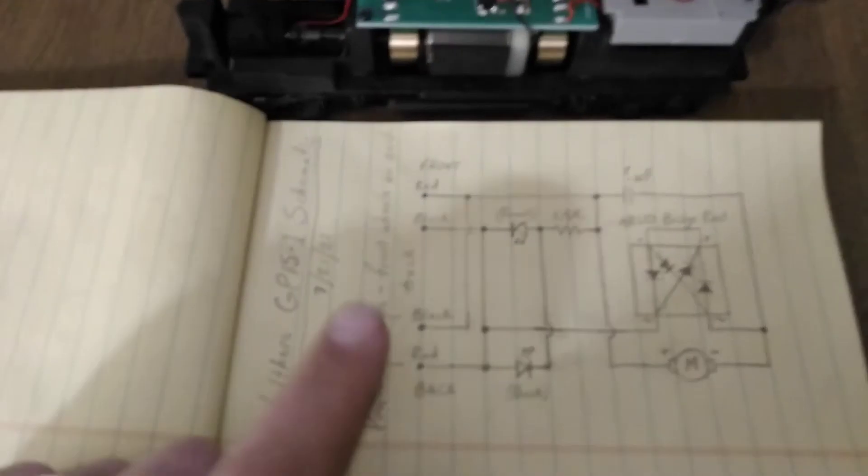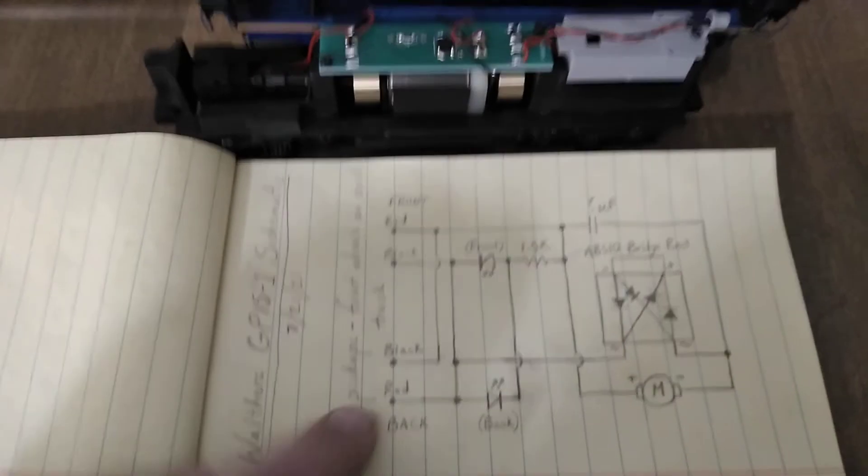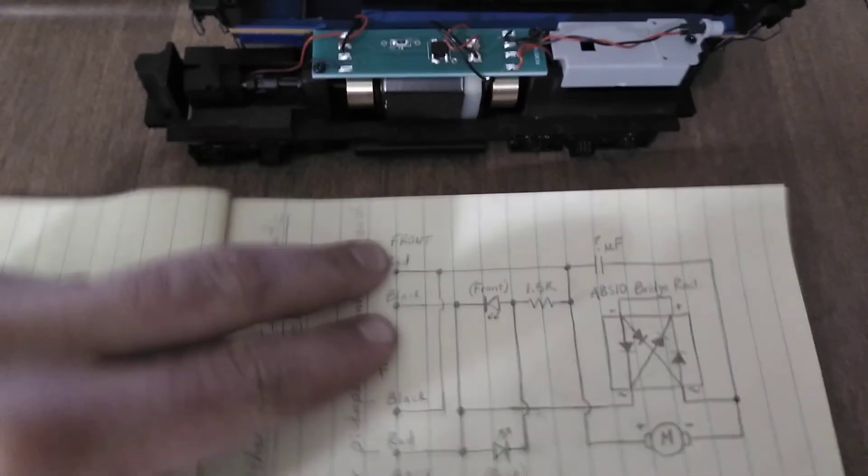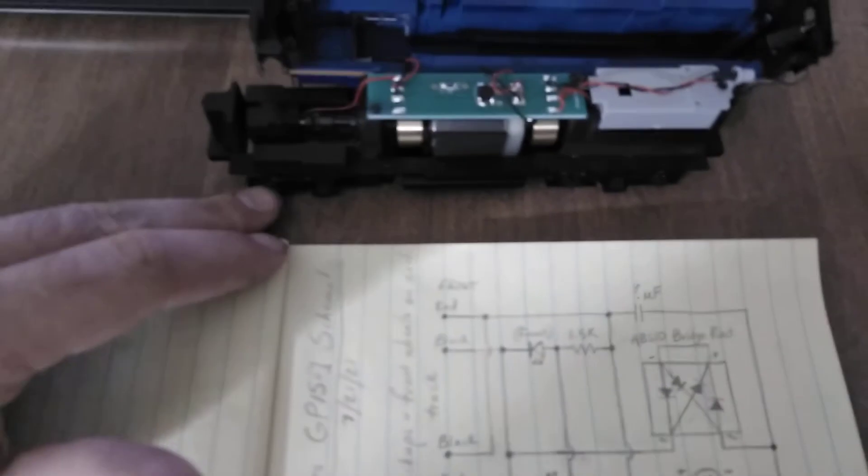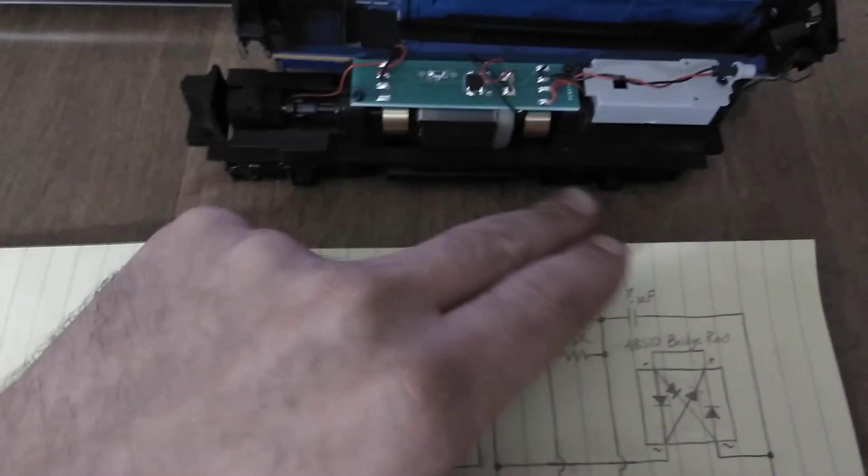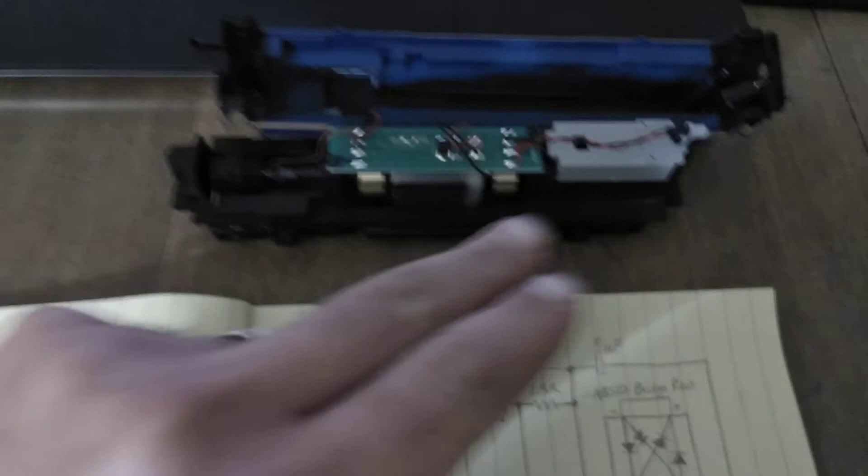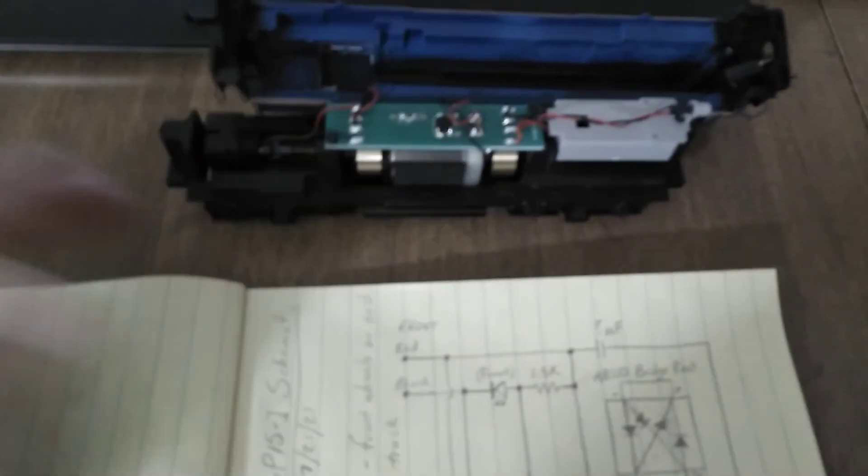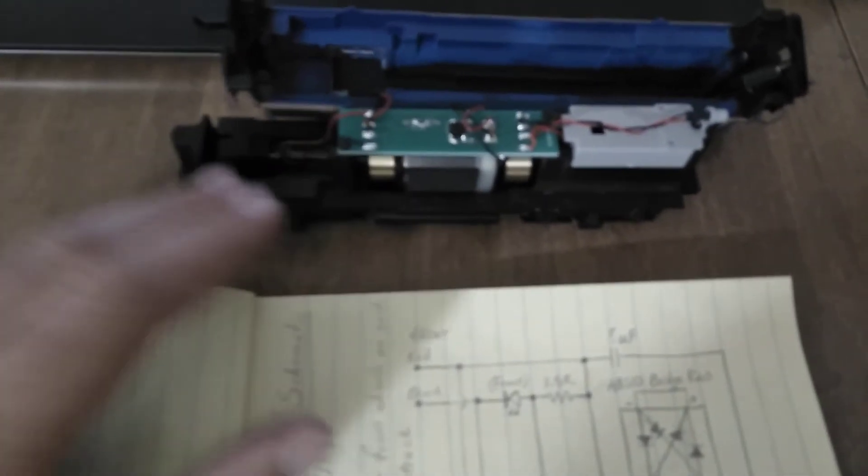What exactly is going on here? So I decided to draw out a schematic of the board and this is what I came up with. Now what we have here are the pickups on the wheels—there's pickups on the front wheels of each truck, so there's pickups here on these wheels and pickups on these wheels.